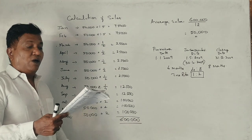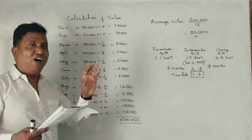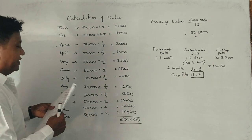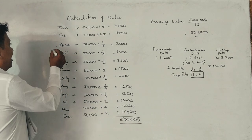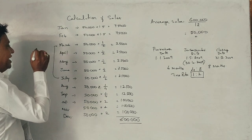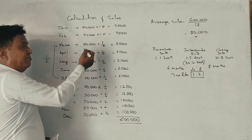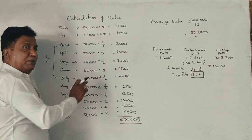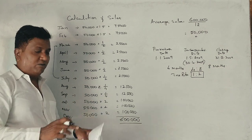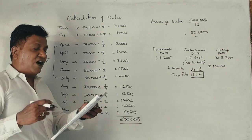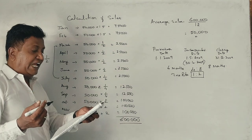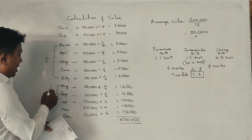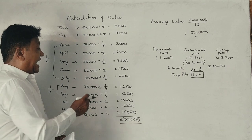March to July: half of average monthly sales, one-half. So March to July is half the average. Sales for August and September is one-fourth of the average monthly sales.